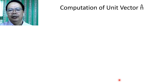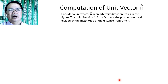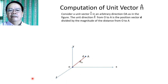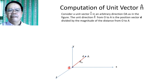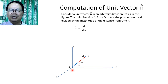How do we compute for the unit vector N? In other words, how do we describe the direction of the vector expressed as a unit vector? If we consider a unit vector N in any arbitrary direction OA as shown in the figure, the unit direction N from O to A is the position vector D divided by the magnitude of the distance from O to A. As such, the direction of OA equals the unit vector D divided by the magnitude of the distance from O to A.